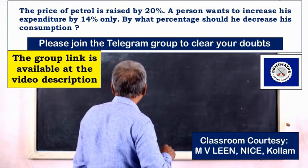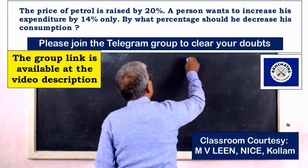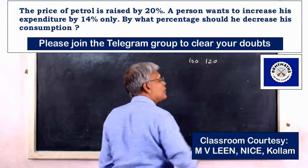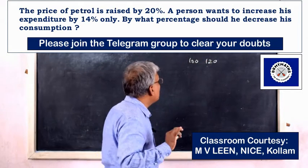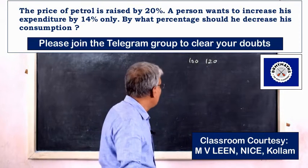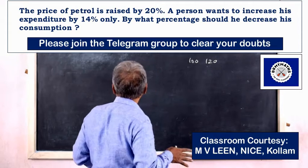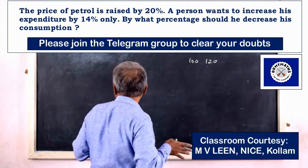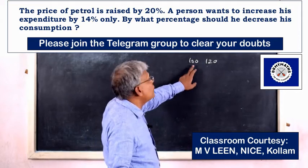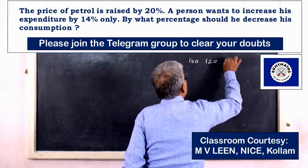If the price of petrol is 100%, and a person wants to increase his expenditure on petrol by 14% only, we need to find the reduction in consumption. The new price is 120, and the new expenditure is 114.